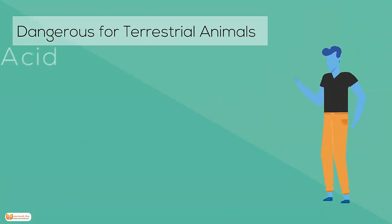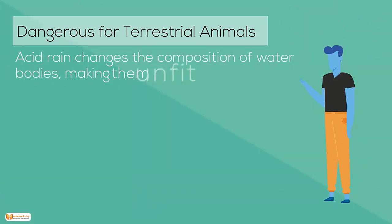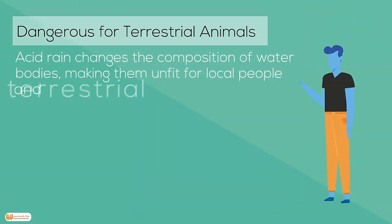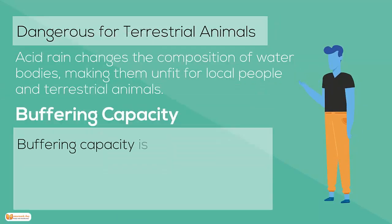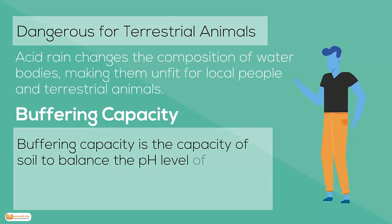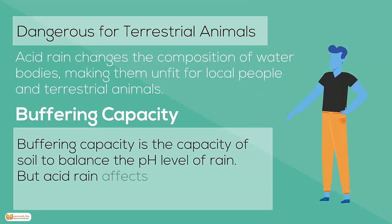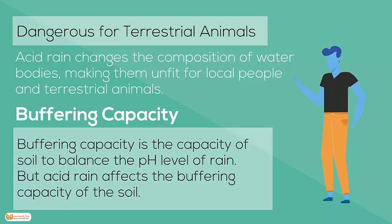Dangerous for terrestrial animals. Acid rain changes the composition of water bodies, making them unfit for local people and terrestrial animals. Buffering capacity is the capacity of soil to balance the pH level, but acid rain affects the buffering capacity of the soil.